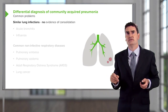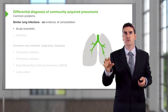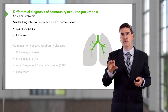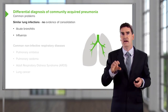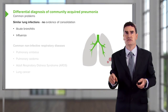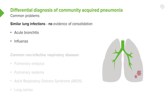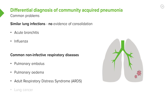The differential diagnosis of community-acquired pneumonia includes acute bronchitis and influenza bronchitis — importantly, these do not normally have evidence of consolidation clinically or on X-ray. A range of common non-infective respiratory diseases must also be considered: pulmonary emboli, pulmonary edema, acute respiratory distress syndrome, and lung cancer. Pulmonary emboli and pulmonary edema are common causes of acute respiratory problems, and many patients with these are initially misdiagnosed with pneumonia, so they need to be considered in the differential.